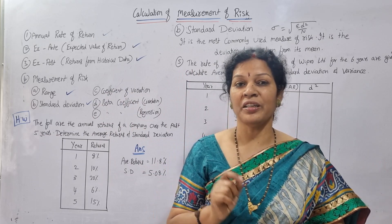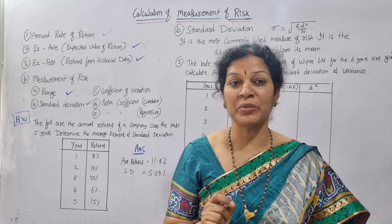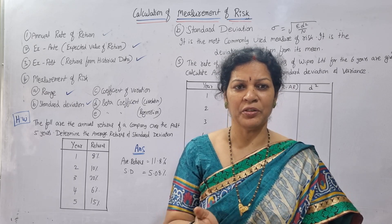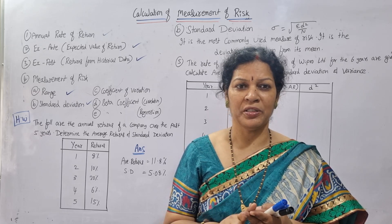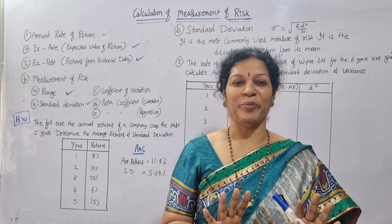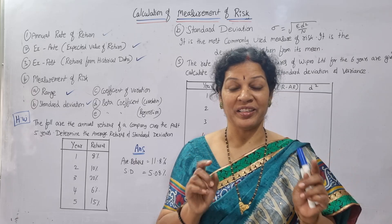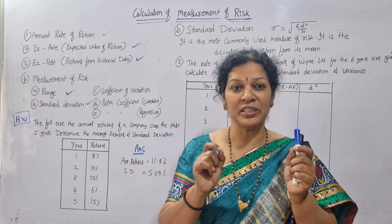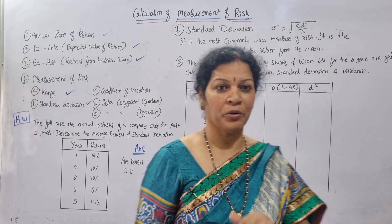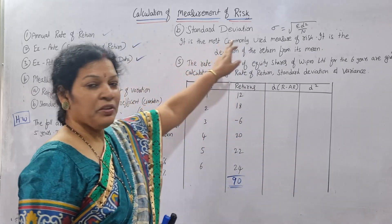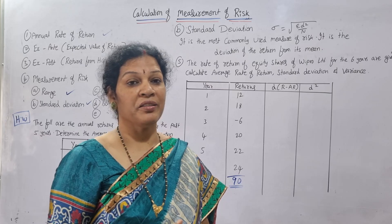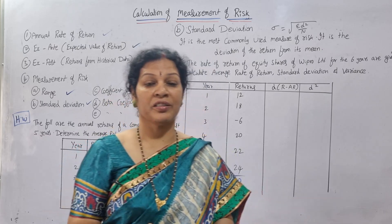Standard deviation means we always take the deviations from the arithmetic mean or average. Using the formula — do you remember? Individual series, discrete series, continuous series — the same formula we are going to use. Standard deviation is most commonly used for calculation of risk. The formula is: rho equals root of sigma d-square by n, for individual series.